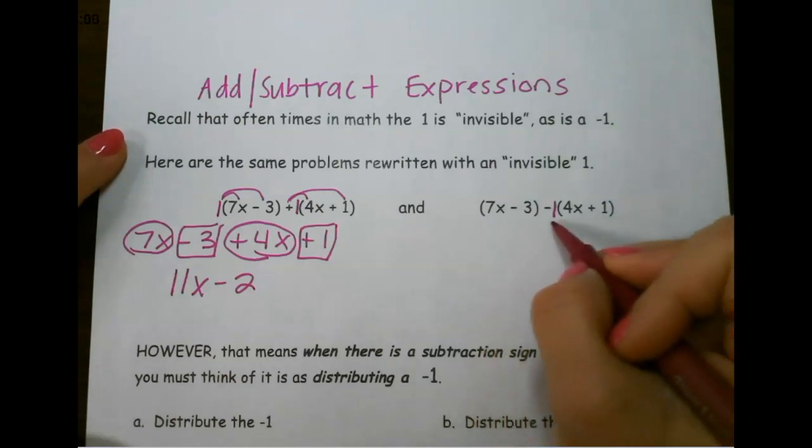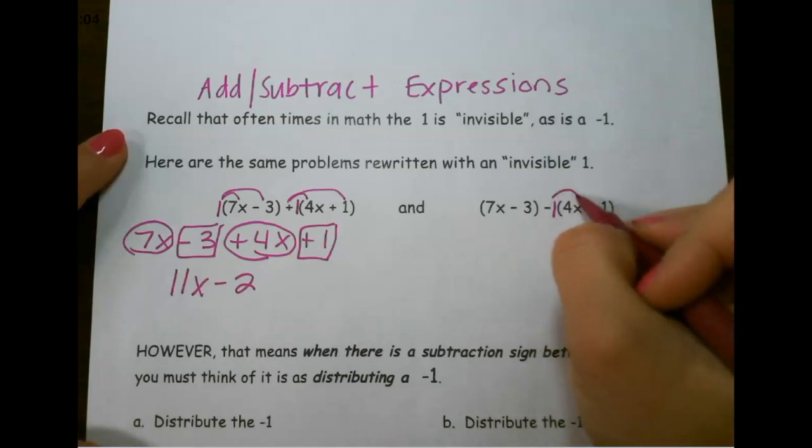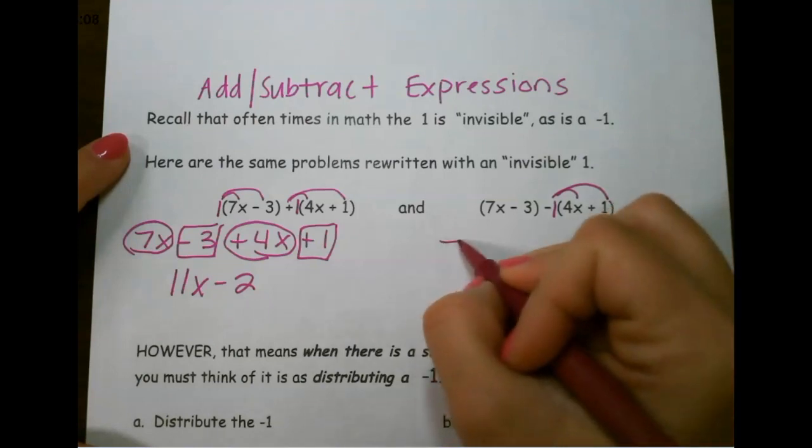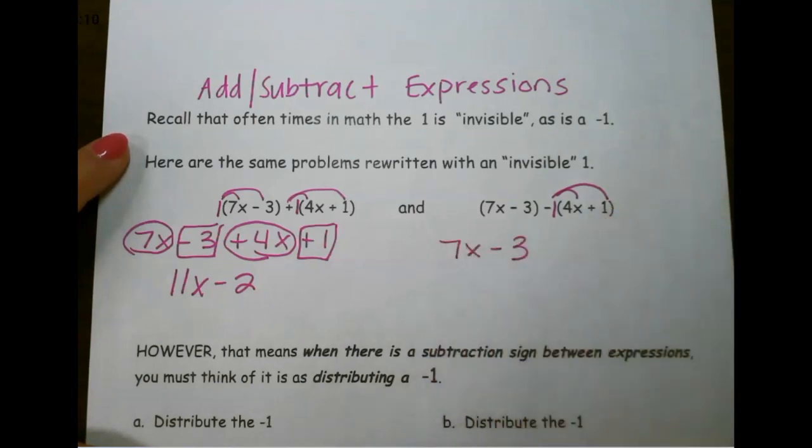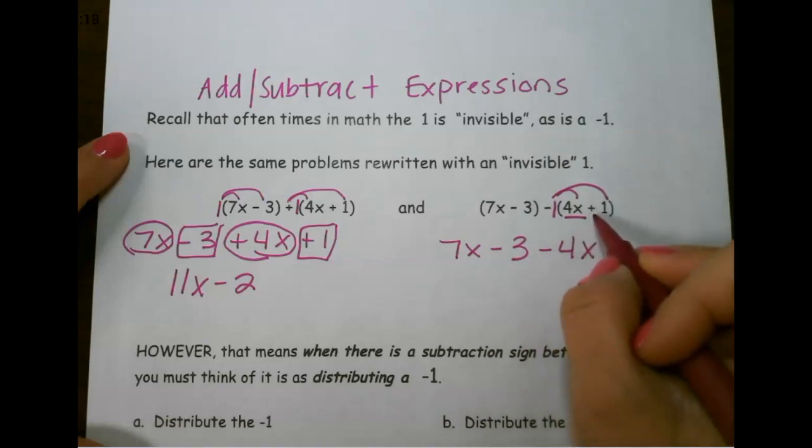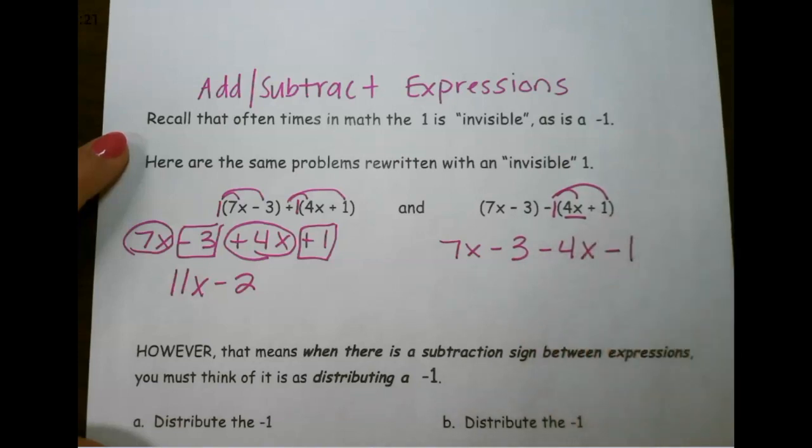But if we look at our second one, our second expression, since there's a subtraction sign in the middle, we are distributing negative 1 to everything inside the parentheses. So the first one stays the same, but the second one, you flip the sign of everything in the parentheses. So this first term becomes negative 4x, and instead of plus 1, it would be minus 1.